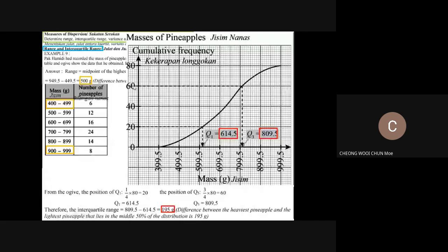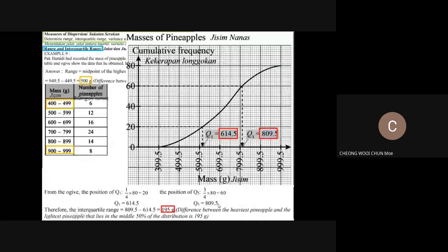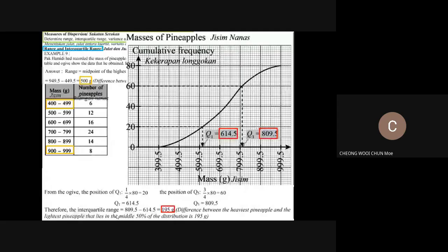For the third quartile, three-quarters of the total frequency gives 60. From the graph, go from 60 on the vertical axis, draw a horizontal line to the ogive, then drop down. This gives 799.5, and adding 10 gives 809.5. So the interquartile range is the third quartile minus the first quartile: 809.5 minus 614.5 equals 195.5.